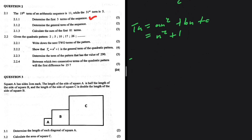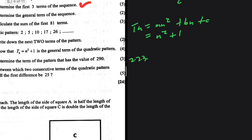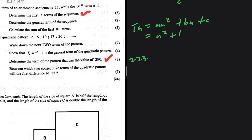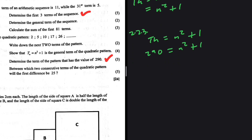Part 2.2.3: determine the term of the pattern that has the value 290. Some people incorrectly substitute 290 in place of n. We set tn equals n squared plus 1 equal to 290. So 290 minus 1 equals 289 equals n squared, giving n equals 17 (rejecting n equals negative 17 since positions are positive). So n equals 17 is the answer.